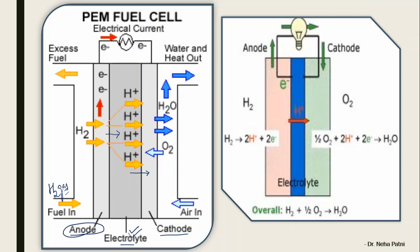At the cathode, you supply air — specifically oxygen gas. The oxygen reacts with the H⁺ ions in the presence of electrons to form water. So water and heat are the outputs. This reaction is exothermic — there is a release of heat. You can utilize both the electricity and this heat. There is no other byproduct or waste formed in the cell, making it a very clean concept.